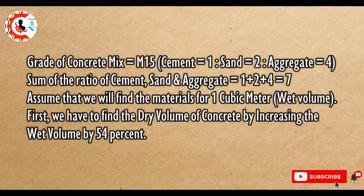Grade of concrete mix equals M15. Cement ratio equals 1, sand ratio equals 2, aggregate ratio equals 4. Sum of the ratio of cement, sand, and aggregate equals 1 plus 2 plus 4 equals 7. Assume that we will find the materials for one cubic meter wet volume.